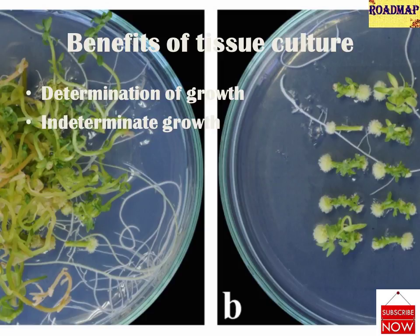Phloem is responsible for the absorption of nutrients while xylem absorbs water. The meristematic cells of the shoot apex divide, leading to the growth of the stem. Some of the stem cells differentiate and develop into leaf primordia and then leaves. Axillary buds, present between the leaf primordia and elongated cells, also possess meristems which can multiply and give rise to branches and flowers.